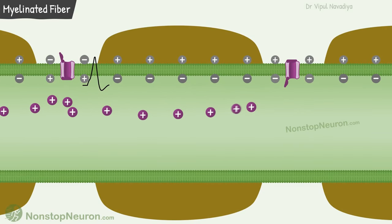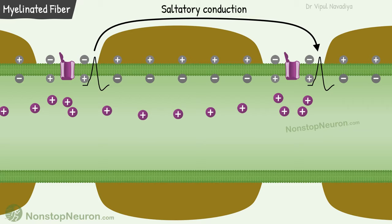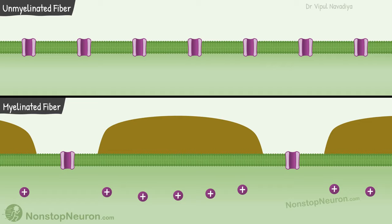The impulse is then conducted to the next node of Ranvier in the same manner. Thus, the action potential jumps from one node to the next — this is called saltatory conduction. But why bother with this when we could use the simpler method seen in unmyelinated fibers? Well, there are two advantages with saltatory conduction.